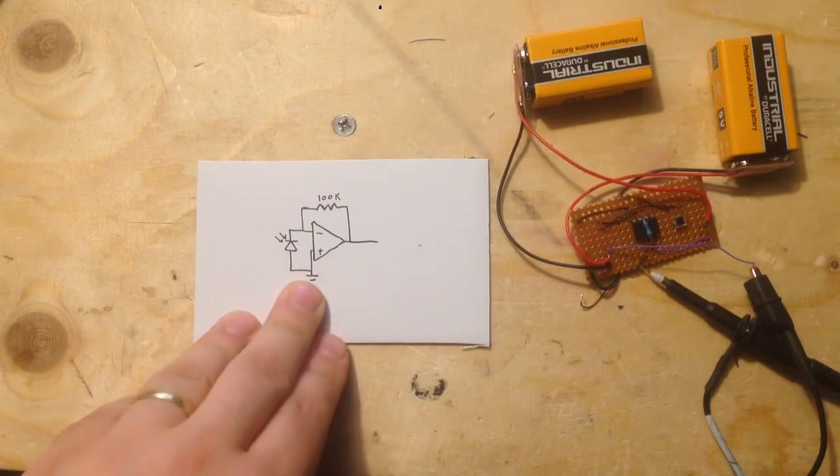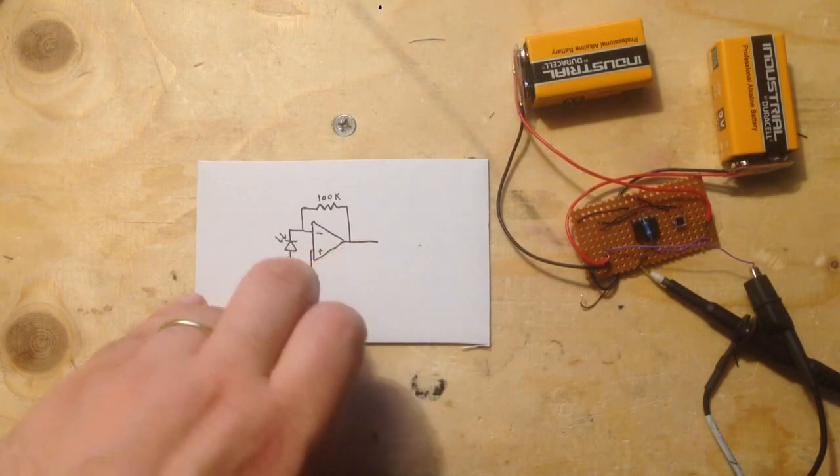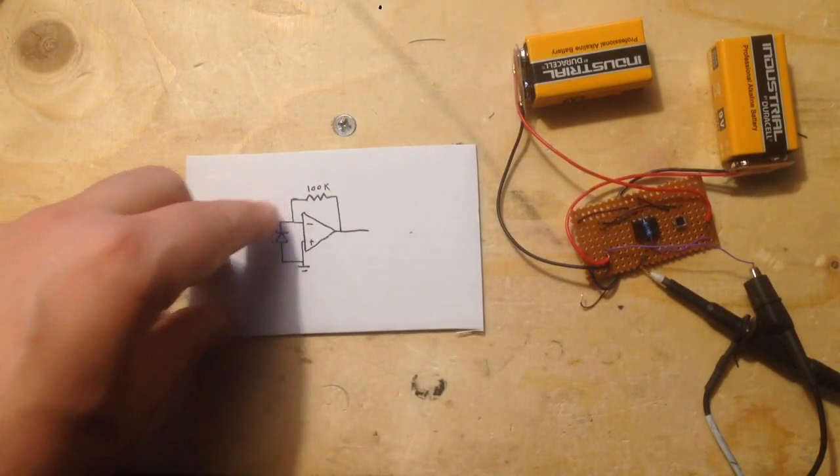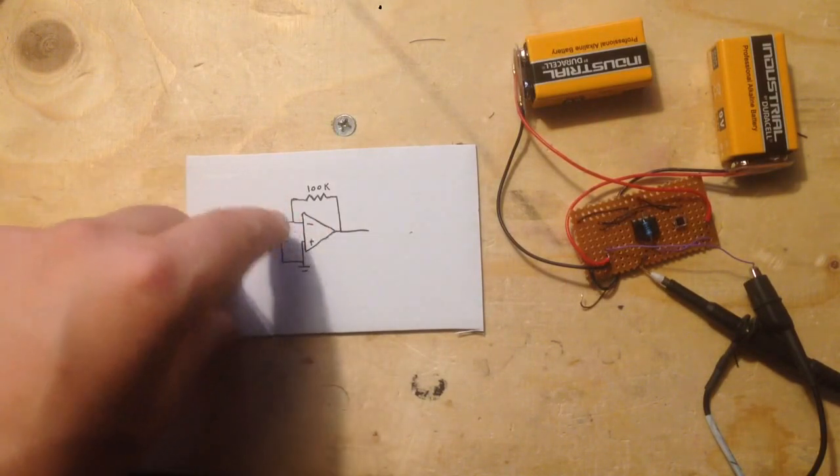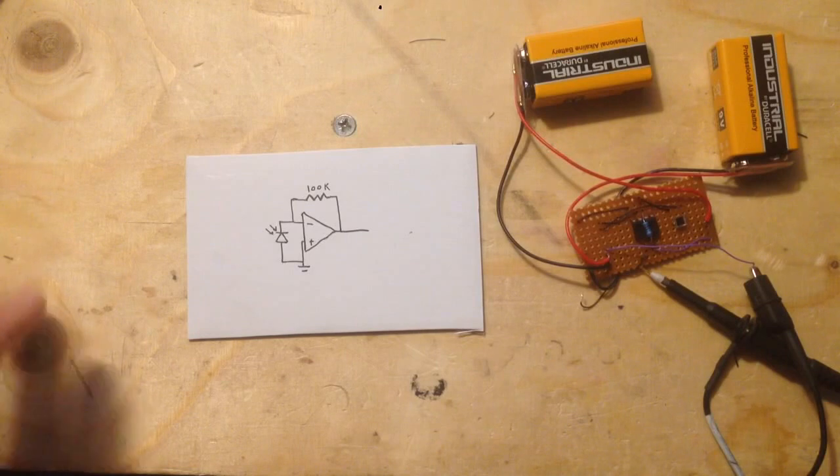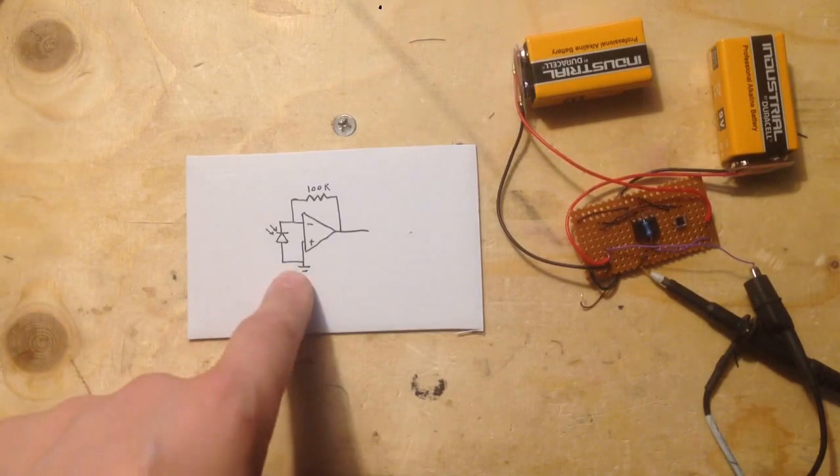The circuit is very simple. It's just basically an op-amp with a large feedback resistor and the photodiode also feeds into that point. One of the golden rules of op-amps is they try and keep their inputs the same. So the positive input here is grounded and the negative input goes to the photodiode.